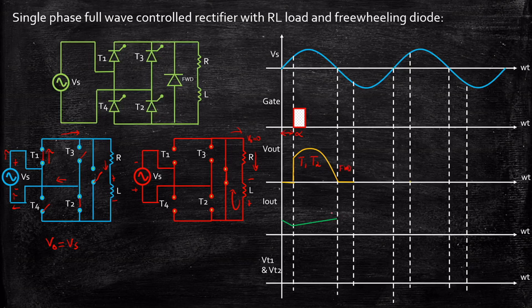The output current will start decreasing during freewheeling conduction. The reason is that the energy stored in the inductor is being dissipated to the resistor. As a result the current decreases in this particular fashion, and that is why I had shown the current initially decreasing at this instant. So here we will have the freewheeling action taking place.